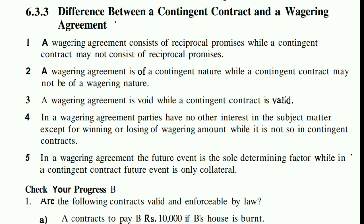So first point: the difference is that a wagering agreement consists of reciprocal promises, which a contingent contract may not consist of. Reciprocal means vice versa.